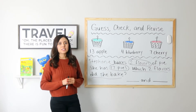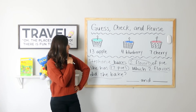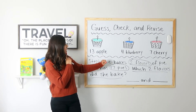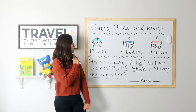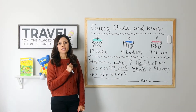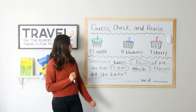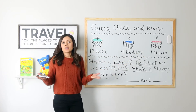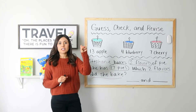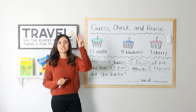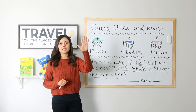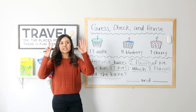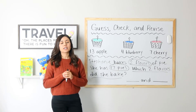So now time to guess. I'm going to guess that she baked apple and cherry. Let's see if we are correct — we are going to check our work. Is 13 plus 7 equal to 17? 13 plus 7 more is 20. That's too big.